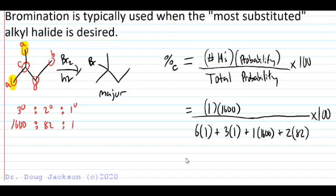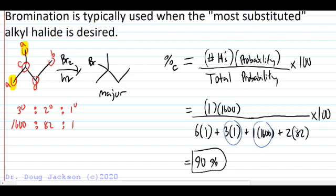1600 divided by this sum of 6 plus 3 plus 1600 plus 82 times 2. And we get a product percentage when we multiply by 100 of 90% or 90.2% of the major product. We can repeat that calculation by subbing out the numerator for any of our four different types of compounds here. But with bromination, it's a major product that's highly specific to that tertiary position. So we just assume a 10% byproduct rate for this reaction.